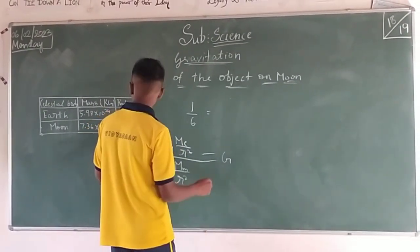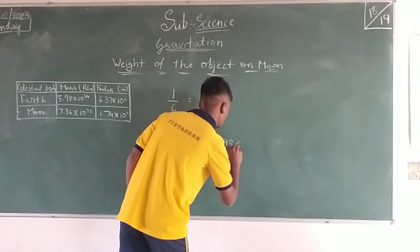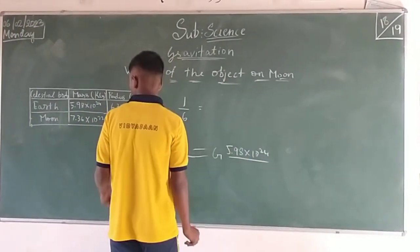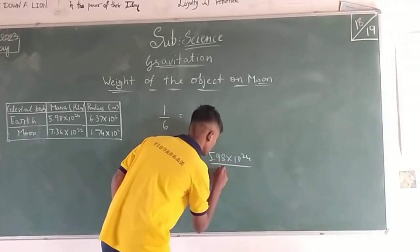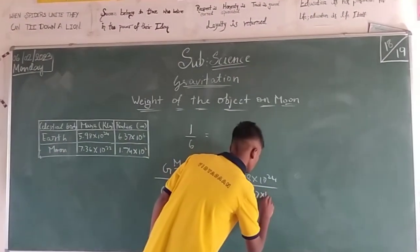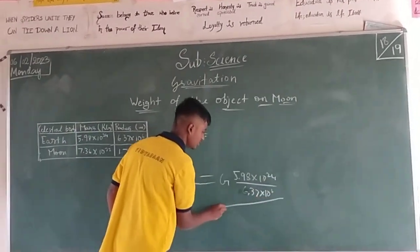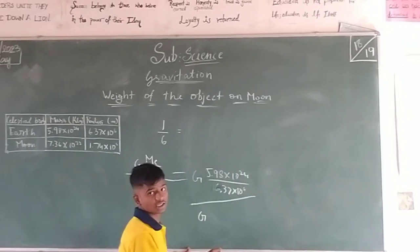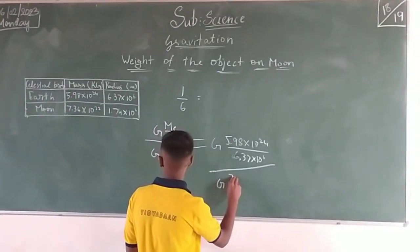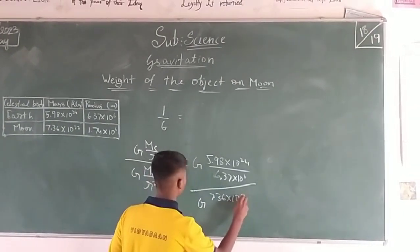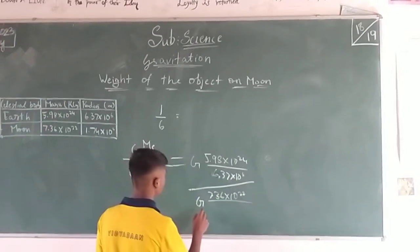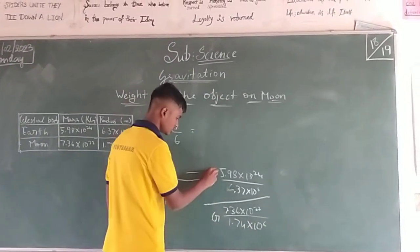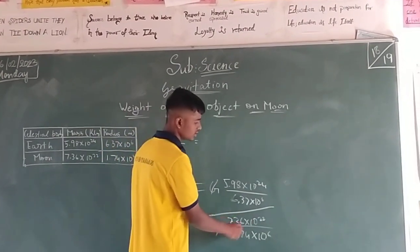The mass of the earth is 5.98 into 10 to the power 24, divided by the radius squared. For the moon, G remains as G because it is a constant value. The mass of moon is 7.36 into 10 to the power 22, whole divided by the radius of the moon, which is 1.74 into 10 to the power 6. Here G and G cancel.